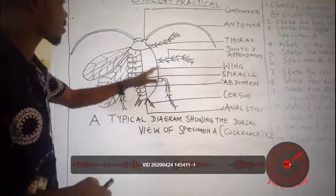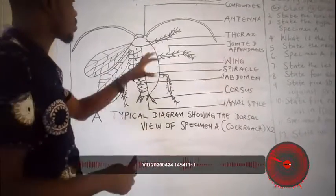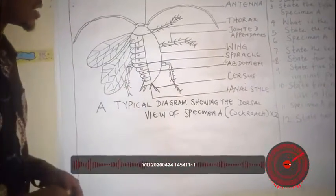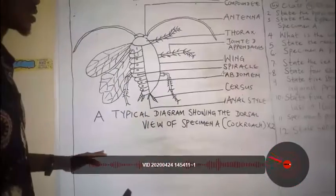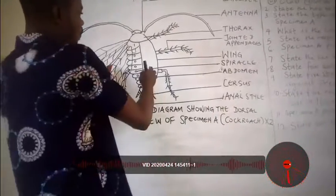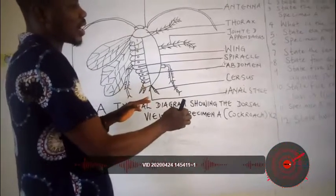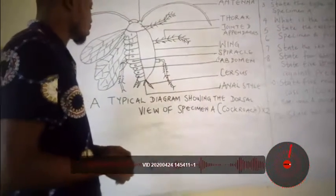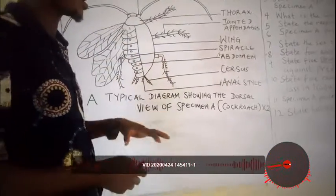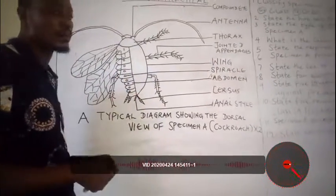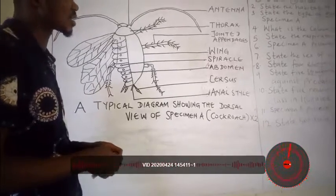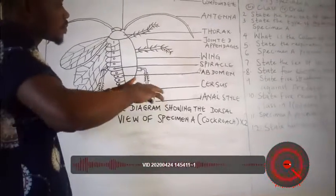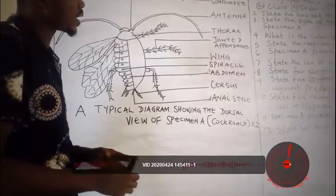Third, it has three pairs of walking legs, which it uses to run away from danger. Fourth, there is the presence of wings, which aid the cockroach in flying away from predators when danger approaches. Fifth, it has a dark brown color, which is used as camouflage against predators, allowing it to blend with its surroundings so predators cannot easily notice it.